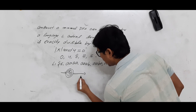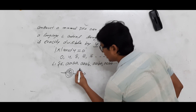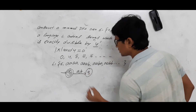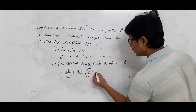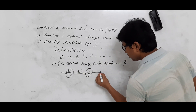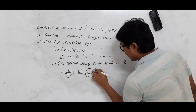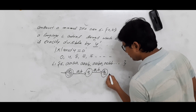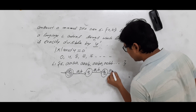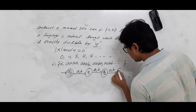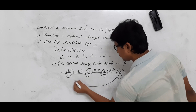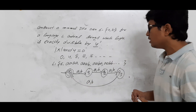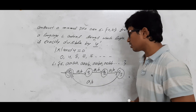The DFA cannot accept strings of length 1, 2, or 3, so Q1, Q2, and Q3 will not act as final states. Length 4 should be accepted. I have constructed the DFA and we will check whether it is correct.